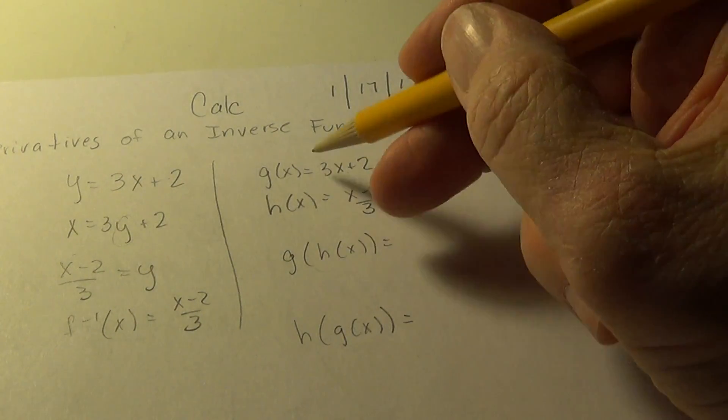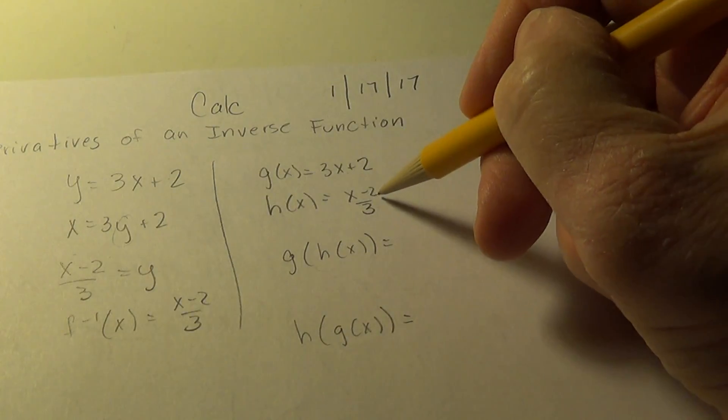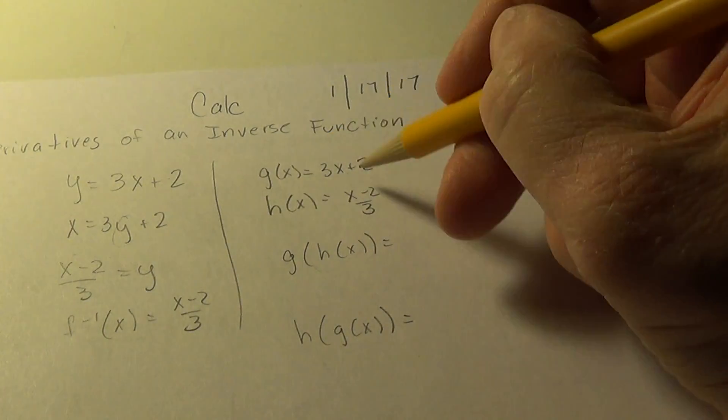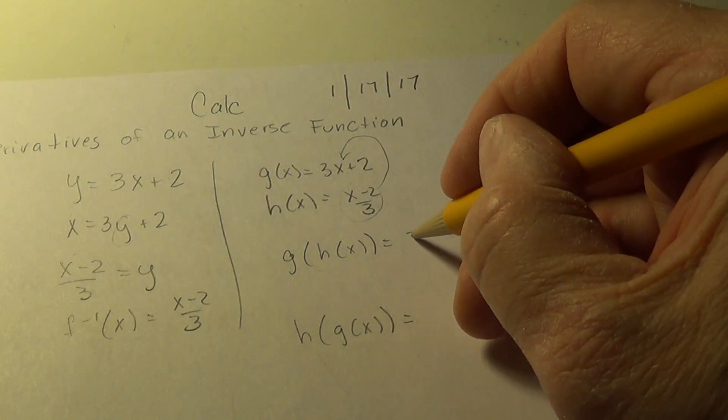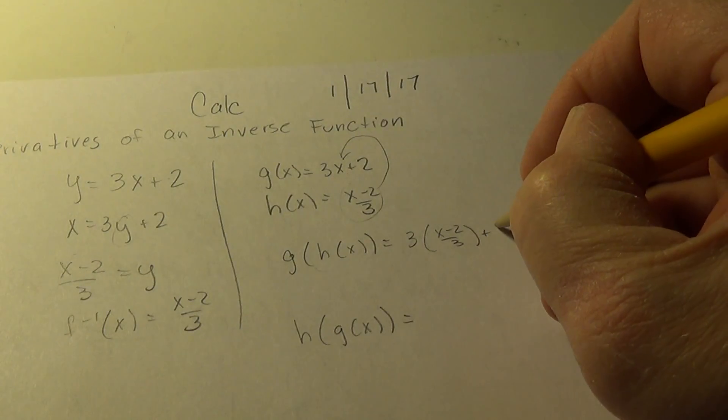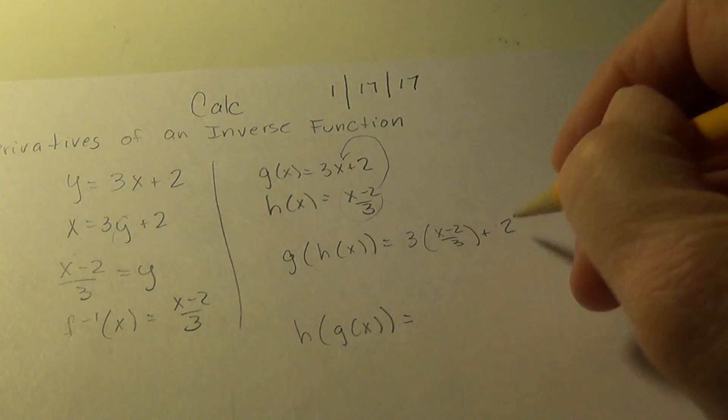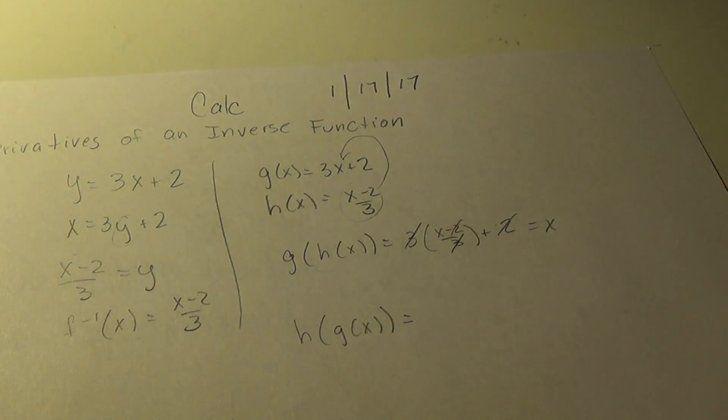This tells me I start with the h function, the inner core, and I'm going to throw that into the outer function. So I get 3 times x minus 2 over 3 plus 2. The 3's cancel, minus 2, and we do come with x.